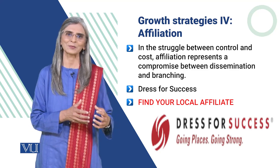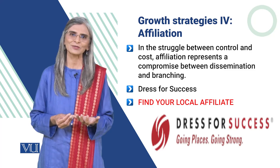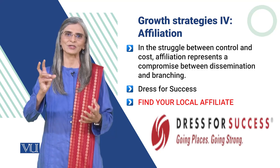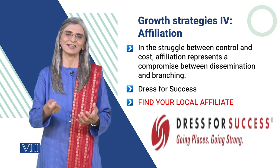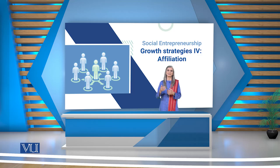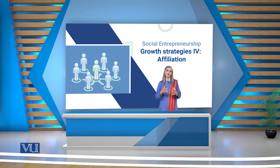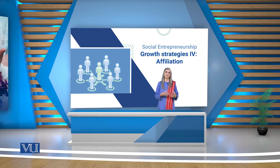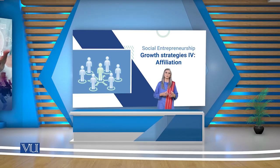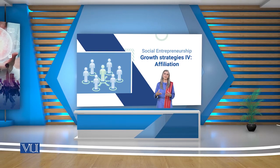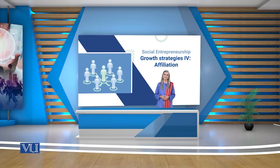لیکن اپنی local requirement کے مطابق — Washington کو نہ control کرنے کی ضرورت ہے نہ quality کے issues ہیں۔ ہر affiliate office mission اور brand تو share کرتا ہے کہ ہم dressing for success کر رہے ہیں، لیکن اپنے اپنے طریقے سے، اپنی local requirements کے مطابق۔ یہ branching کی ایک inexpensive form ہے جس میں locally چیزوں کو manage کیا جاتا ہے، اور local social capital کا فائدہ ہوتا ہے۔ Local businesses، dressmakers یا community members ہی donate کر رہے ہیں اور locally وہ dressing potential candidates کے لیے use ہو رہی ہے۔ Thank you.